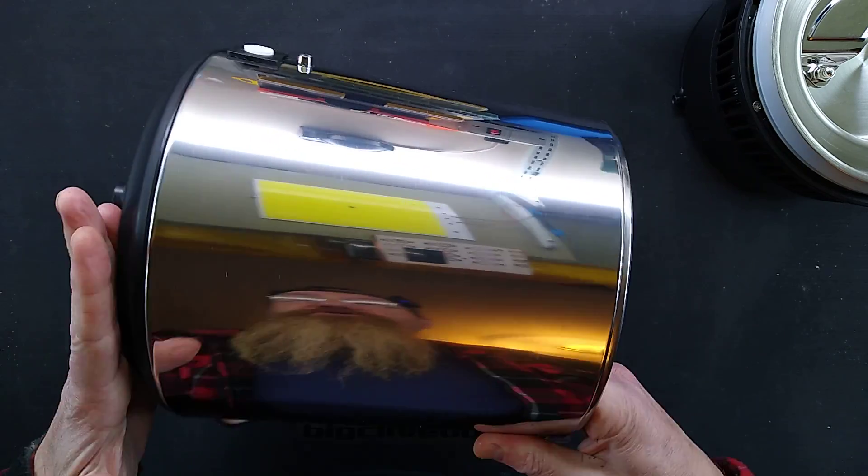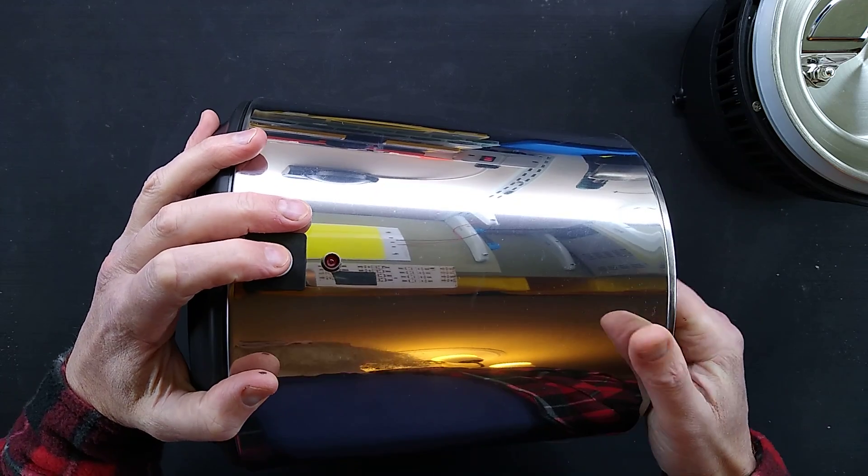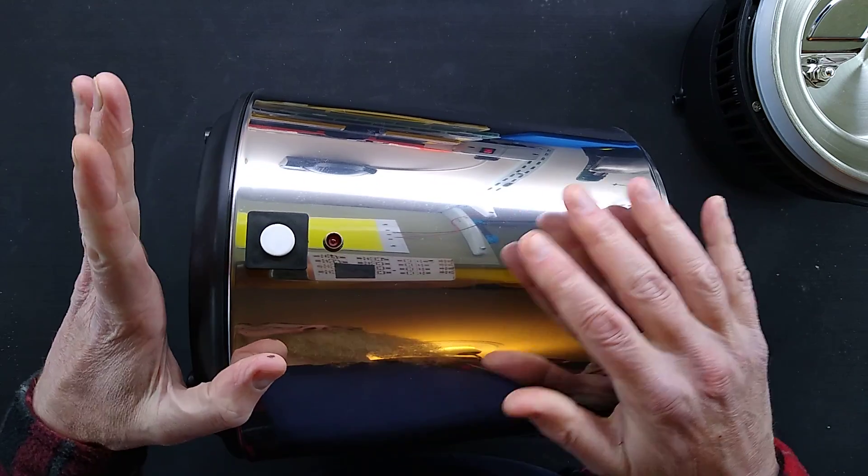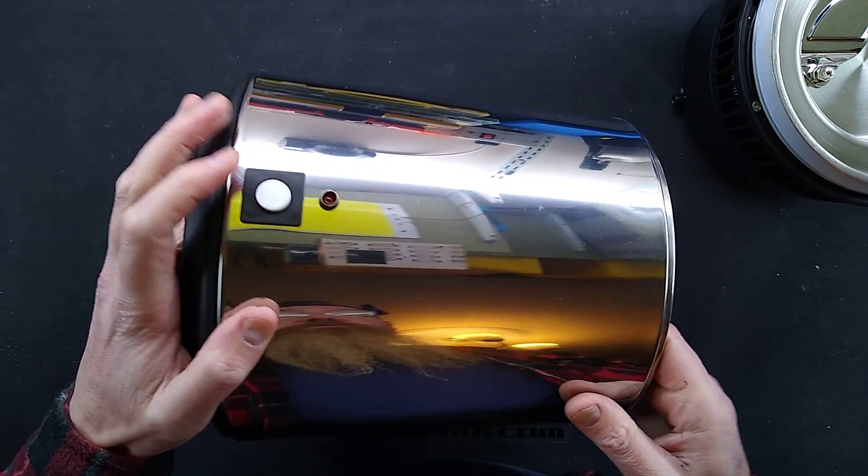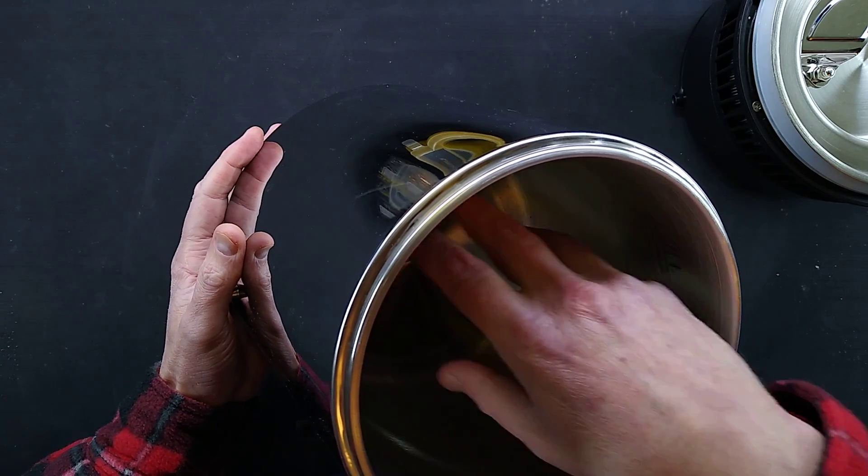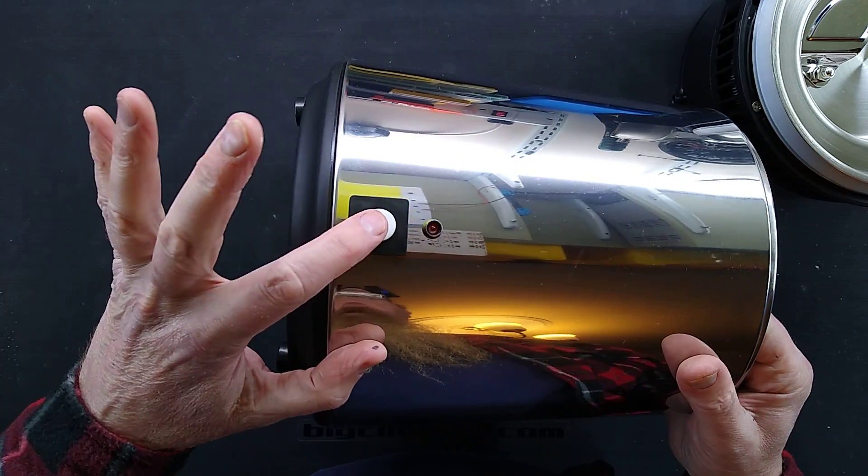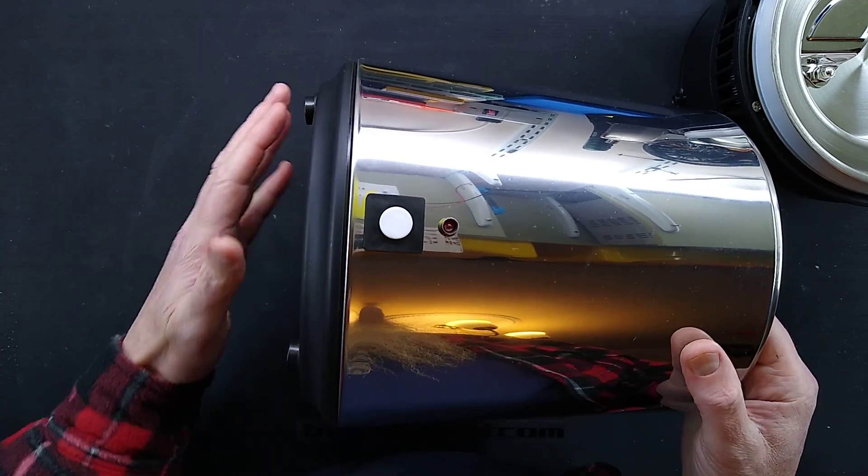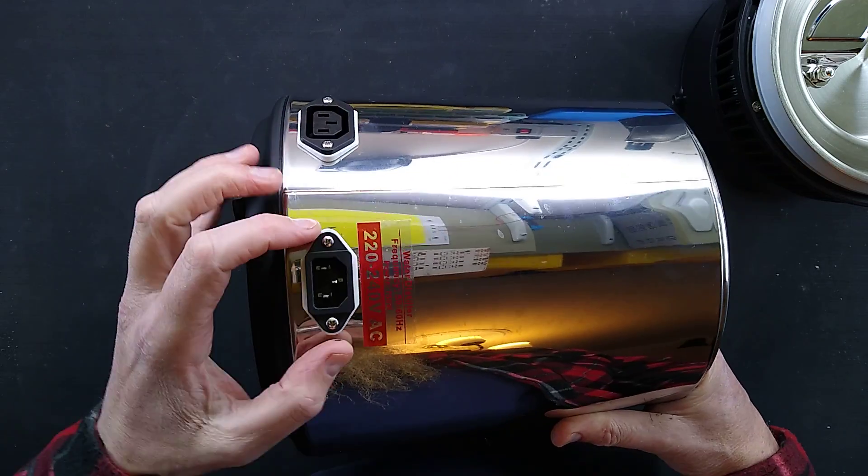So we have a switch on it, a resettable switch, because this is a thermal switch. It will cut out when the thing boils dry. That's how it detects when it's finished the cycle, because once the residual water has boiled off, the temperature rises quite suddenly and that causes this to trip out and turns it off.